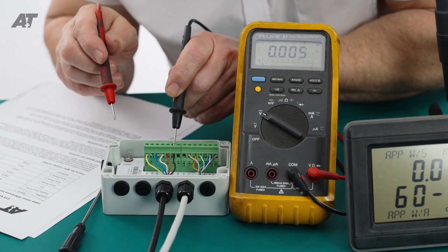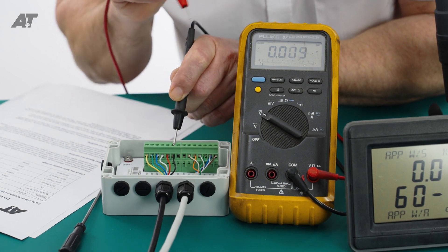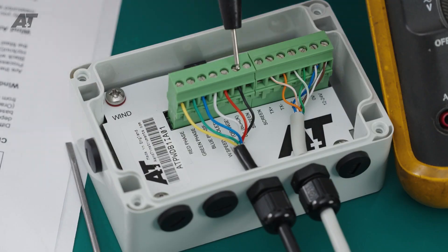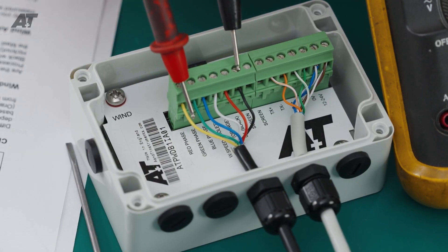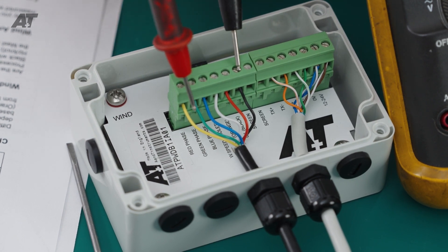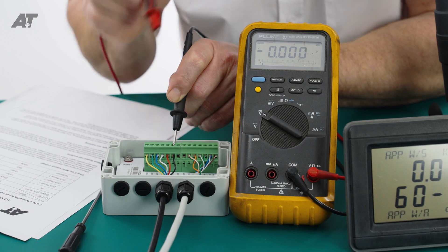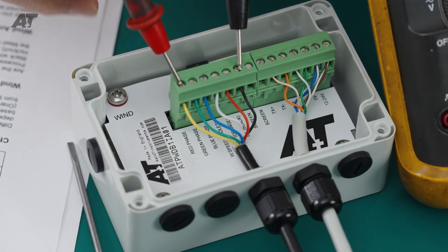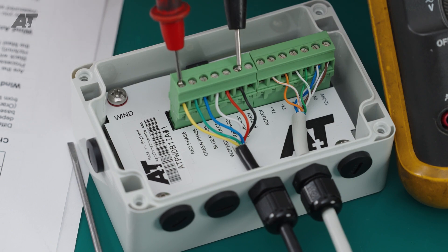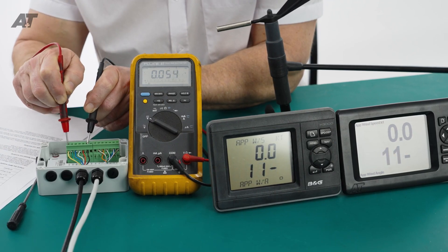Once you have checked the masthead unit voltage, you can check the voltage of the three analog phases with the black probe on the black wire. On an A&T cable, the three phases are yellow, green, and blue. On a B&G cable, the colors are red, green, and blue. Depending on where the wind angle is, you measure the three voltages. They should all be moving between close to 0 volts and the masthead unit supply voltage, which in this case is 6.5 volts.